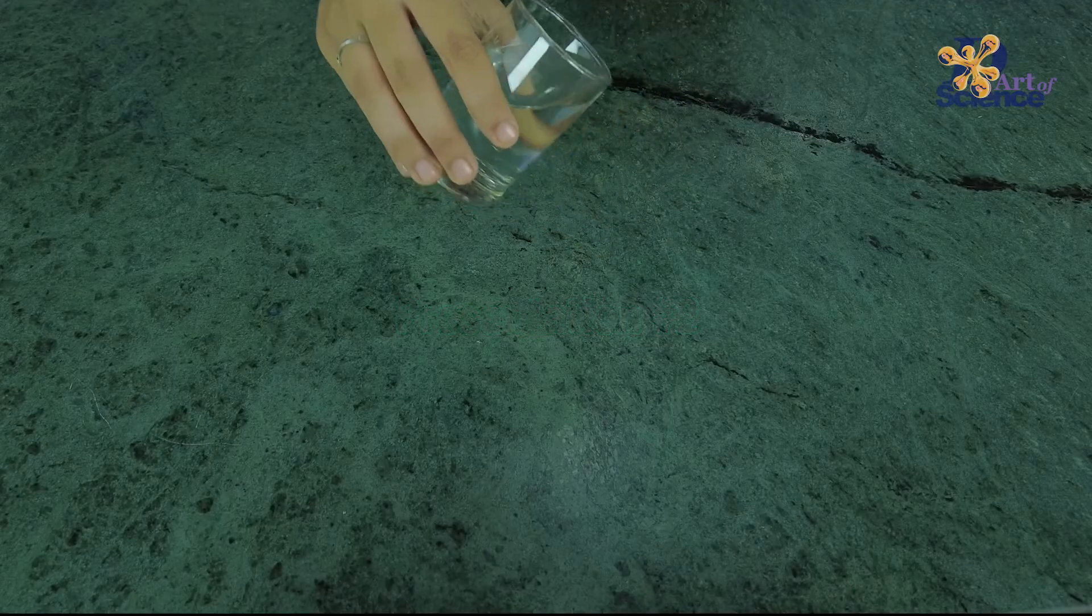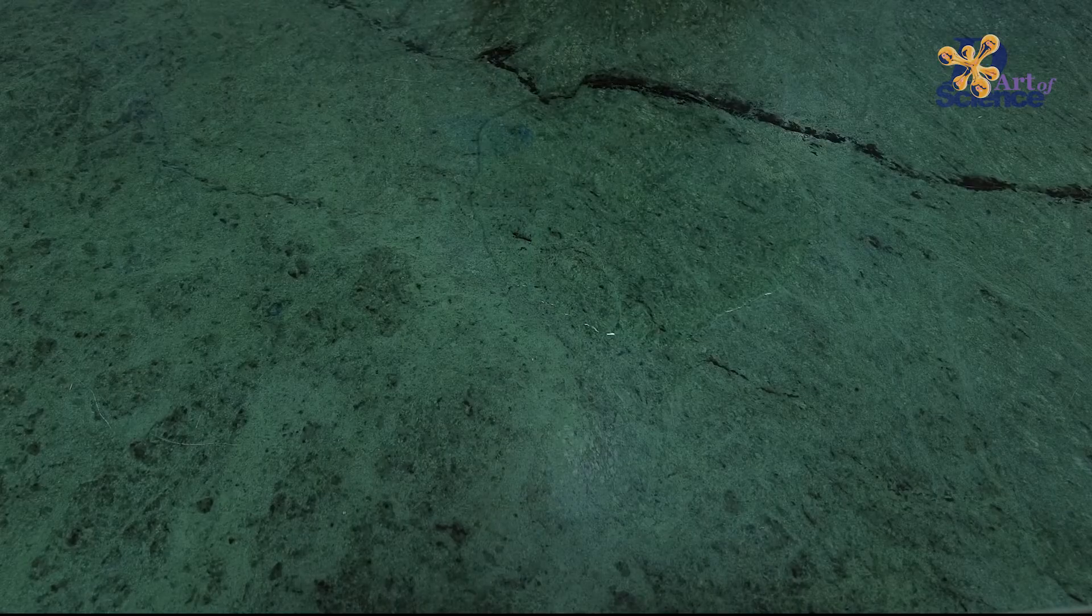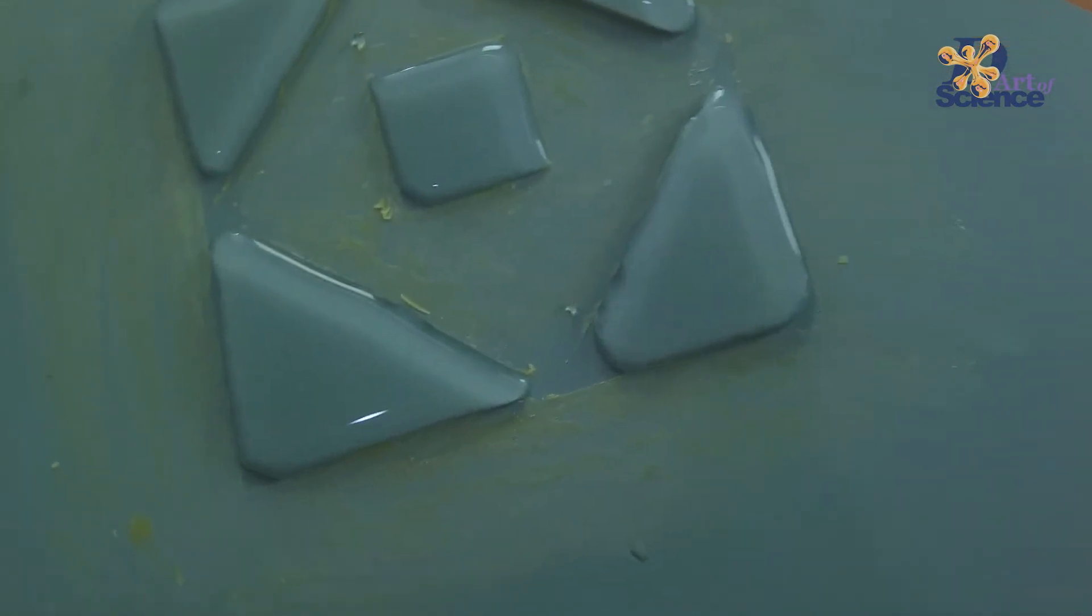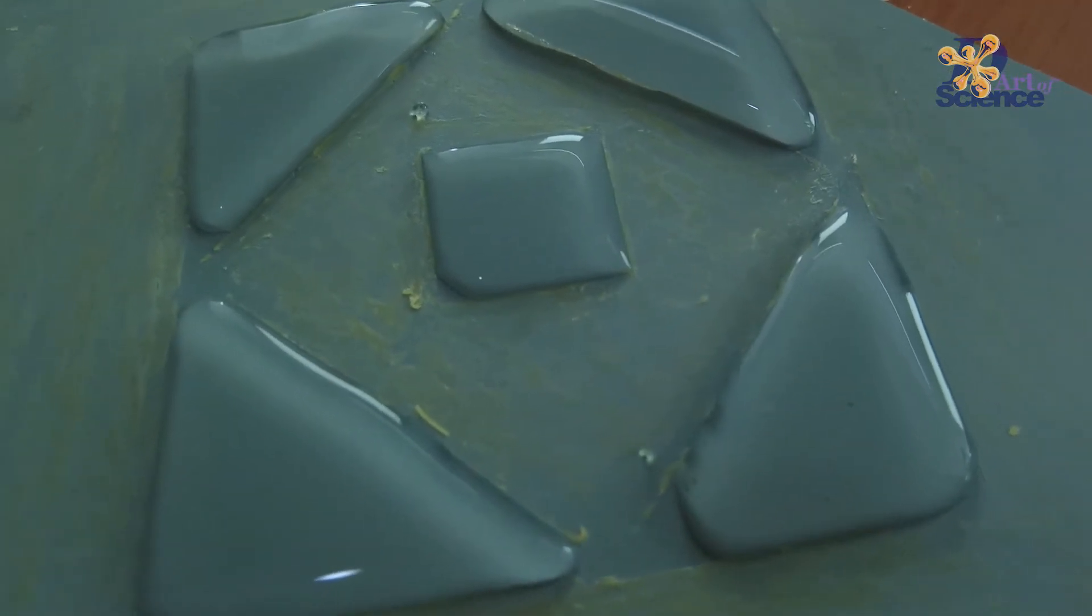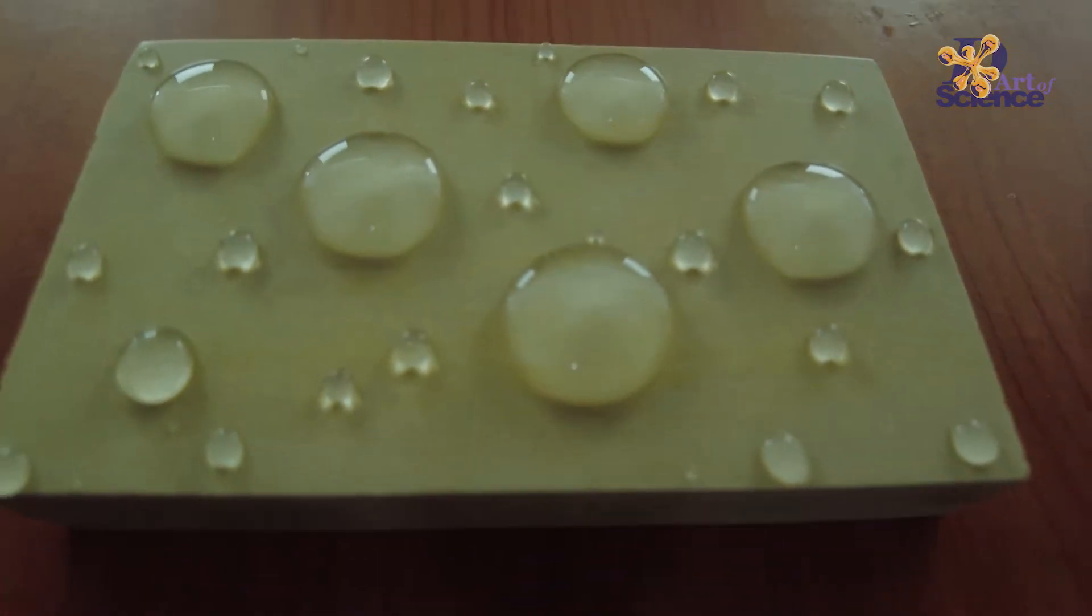Water just flows in all directions if it's poured on a flat surface. But what if I say that science can help you shape water in squares, triangles, circles, and even more cool patterns? It's not magic, it's just the art of science.